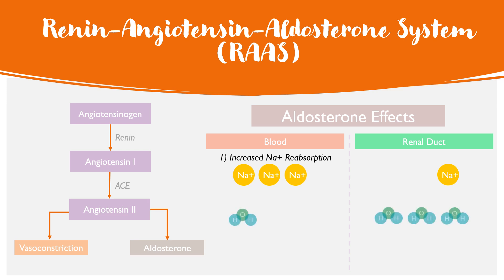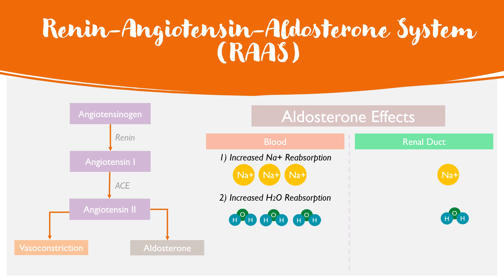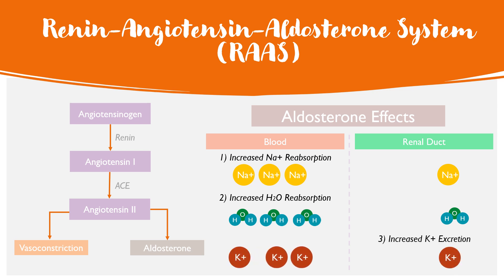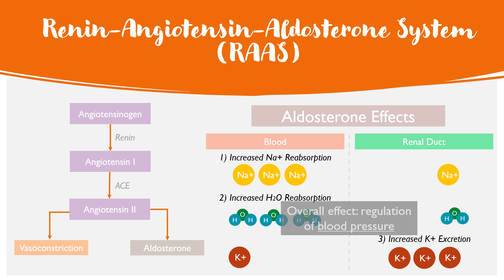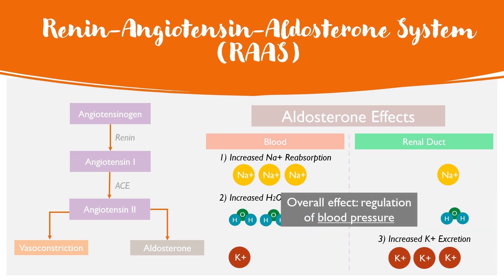The second effect is increased water reabsorption, because water tends to follow sodium down a concentration gradient, resulting in more H2O reabsorption. The third effect is potassium excretion — more potassium moves from the blood into the renal duct to be excreted in urine. The overall effect of all of these is to regulate blood pressure, and combined with vasoconstriction, this keeps blood pressure within a normal range.